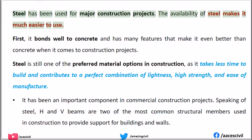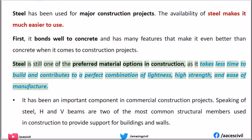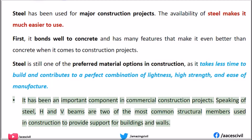Steel has been used for major construction projects. The availability of steel makes it much easier to use. It bonds well to concrete and has many features that make it even better than concrete when it comes to construction projects. Steel is still one of the preferred material options in construction, as it takes less time to build and contributes to a perfect combination of lightness, high strength, and ease of manufacture. It has been an important component in commercial construction projects.